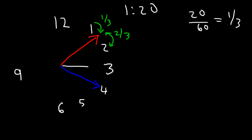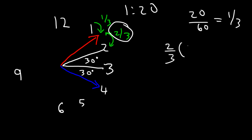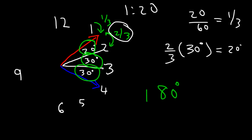Keep in mind, the angle between 1 hour is always 30 degrees — it's 360 divided by 12. So between 3 and 4 is 30 degrees, and between 2 and 3 is 30. This is when you want to use this fraction. This angle is 2 thirds of an hour — that's the missing 40 minutes. So the angle for 1 hour is always going to be 30; we've got to find 2 thirds of 30. 30 divided by 3 is 10, times 2 is 20. So therefore this angle is 20. Now all you need to do is add up these three angles: 20 plus 30 plus 30 is equal to 80. So that is the angle between the hour hand and the minute hand.